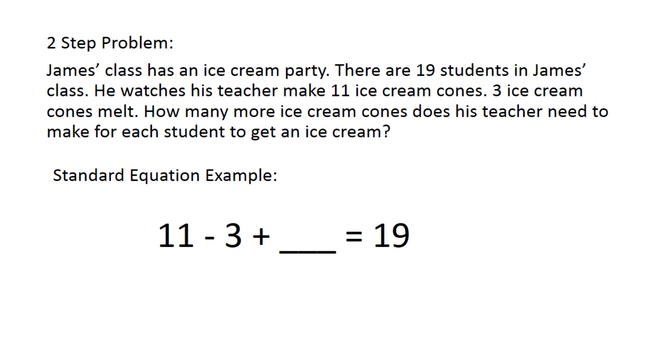Here's our standard equation problem. 11 ice cream cones minus the three ice cream cones that melted plus some number equals 19, which is the number of students that need to get ice cream in James' class.